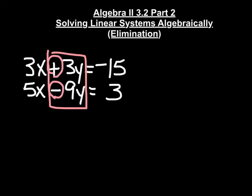Now I need to look at those two and ask: what is the least common multiple of 3 and 9? Well, it's 9. So if I take this first equation and multiply it by 3...